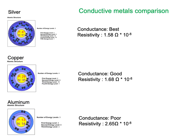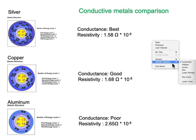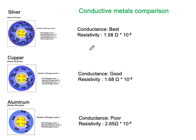To give you a bit more of an explanation, I've taken the best conductor we know about and that's silver. It has a resistivity of 1.58 ohms per meter times 10 to the minus 8 — so a tiny, tiny bit of resistance.